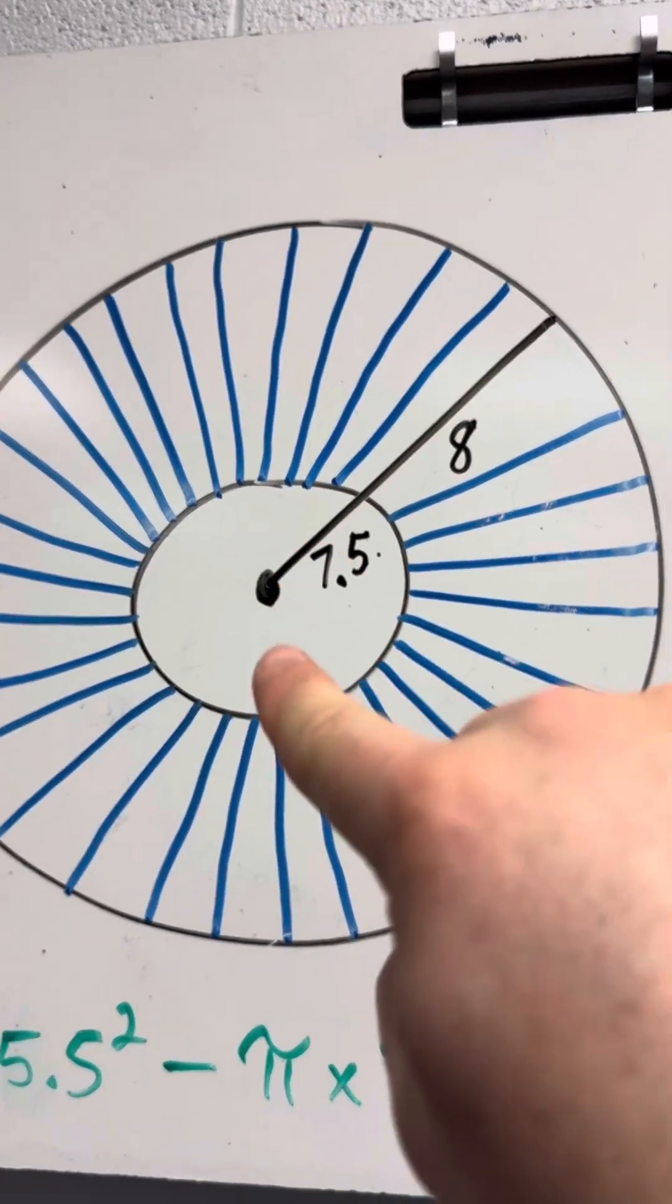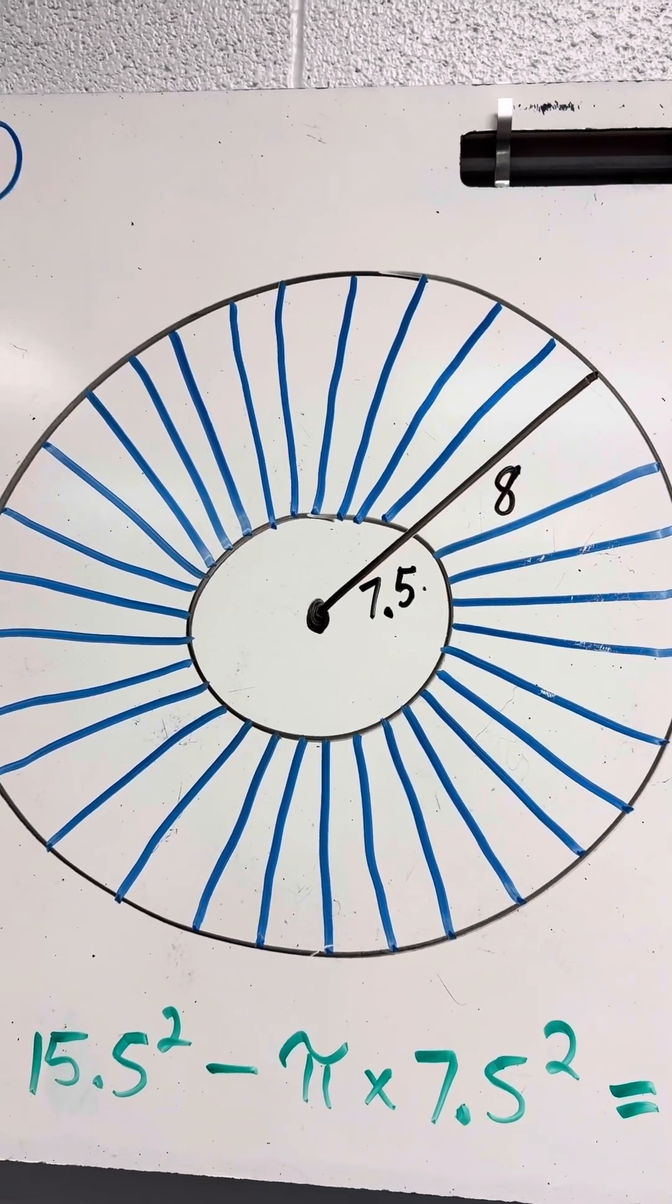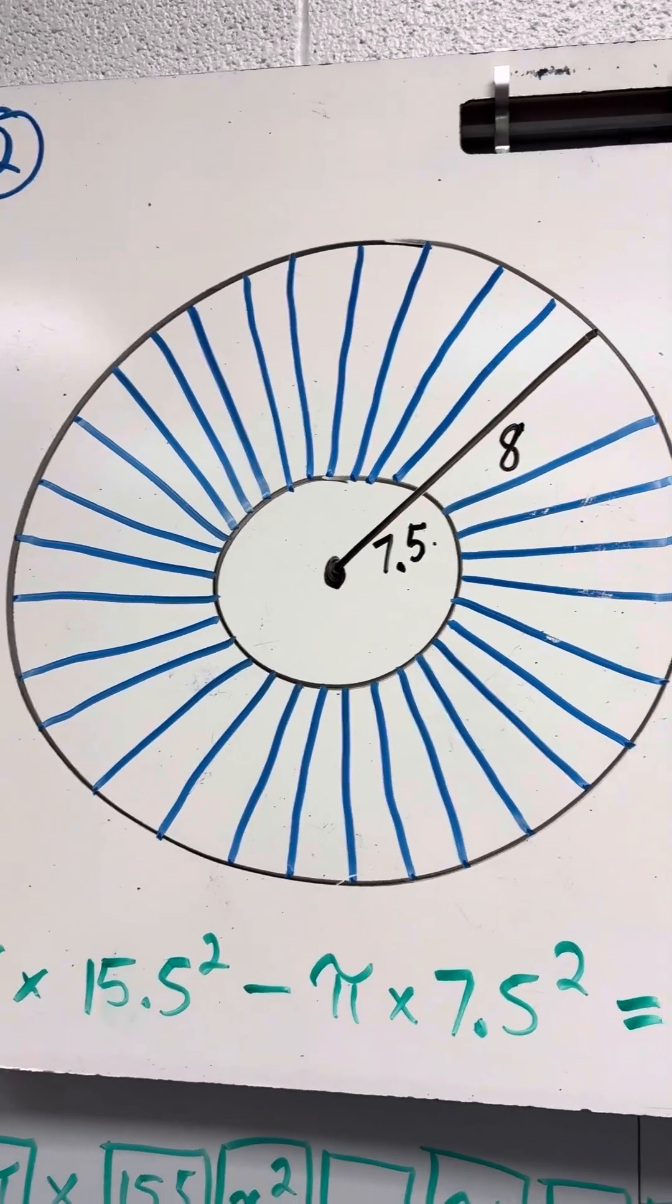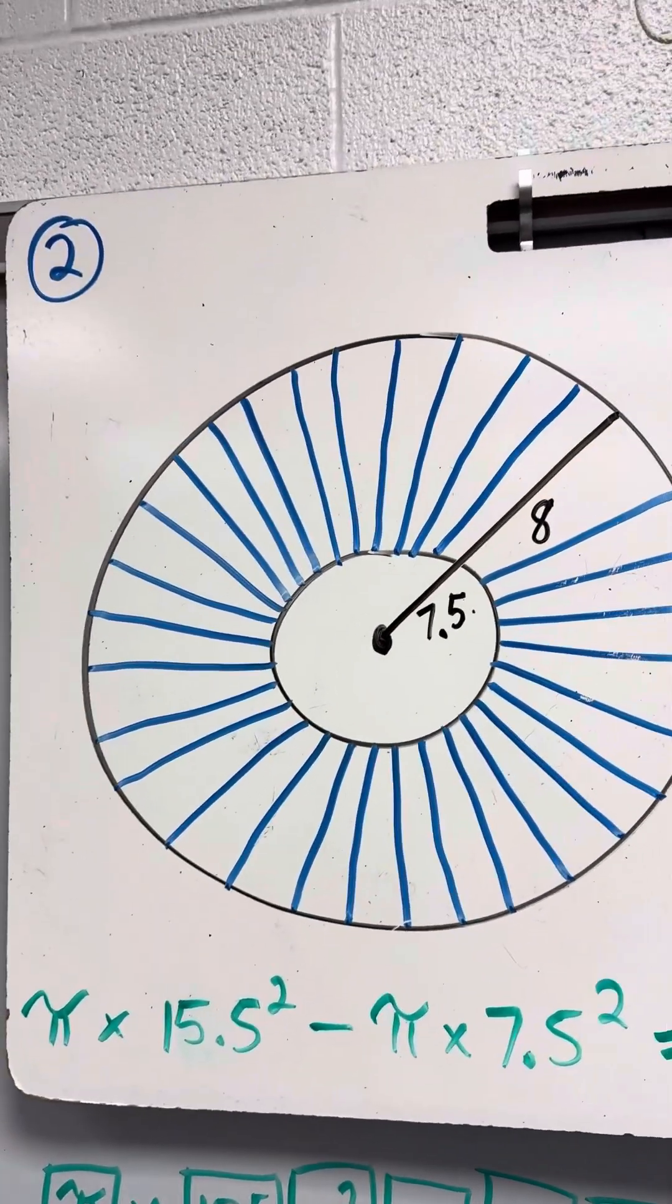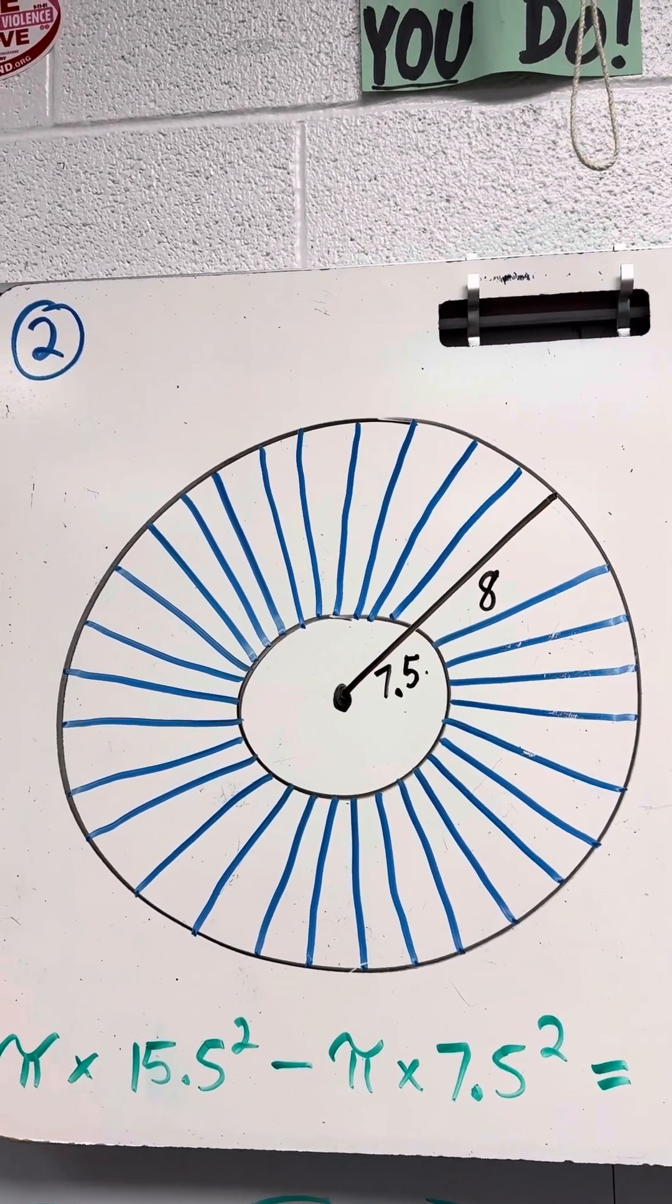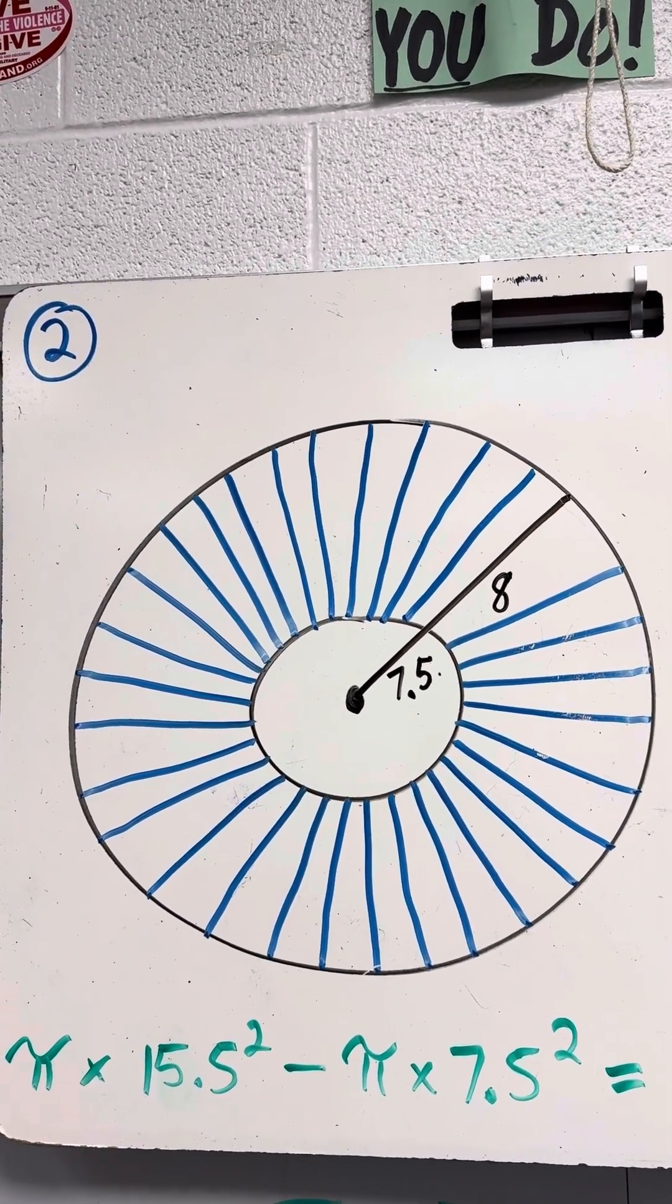Here's the next problem. Just like the first one, you're going to add these two numbers together. 7.5 plus 8 is 15.5. So it's pi times 15.5 squared minus pi times 7.5 squared.